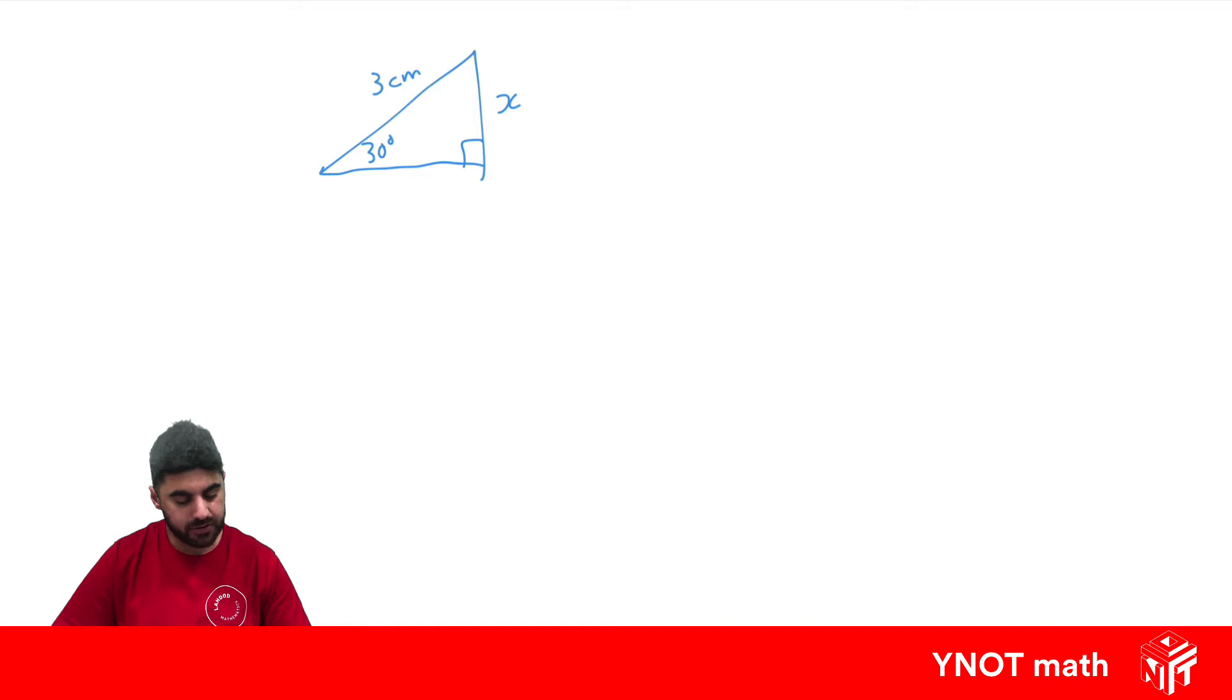The first thing we want to do is label the sides we're interested in. So this one here is the hypotenuse because it's opposite the right angle. And since we want to reference 30, this side is opposite the 30. So that side there is the opposite. Now out of all our trig functions, which one uses opposite and hypotenuse?